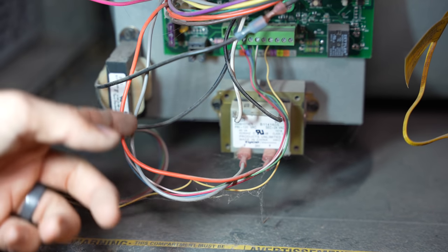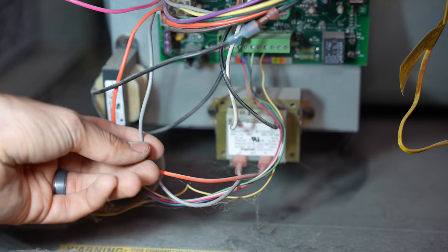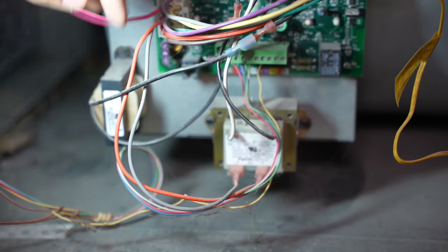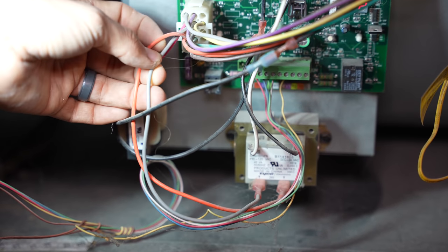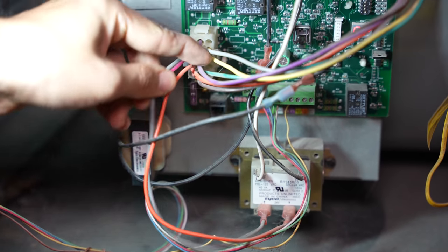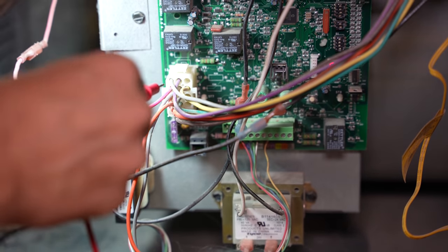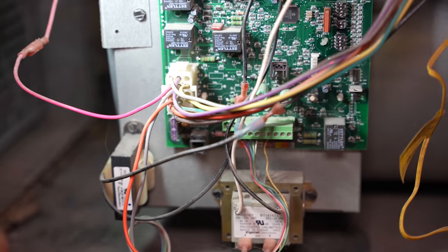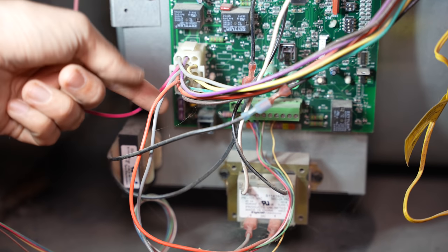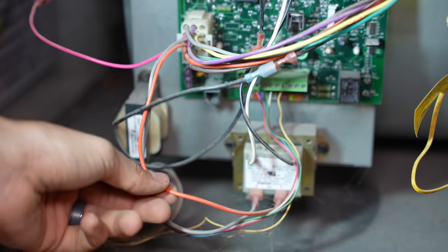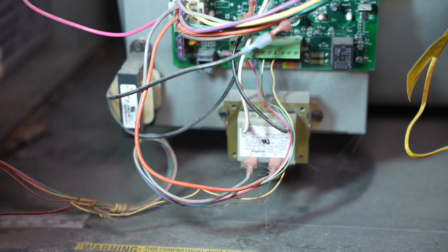In many furnaces, you can find out where the common goes by following this 24 volt common wire, and seeing where it goes. In this one, it just goes into this big plug, right over here. So, you could use this terminal for troubleshooting. You could stick a lead in here, but if you're trying to hook something up, then this doesn't really help you. So, in this case, this transformer doesn't help us too much.